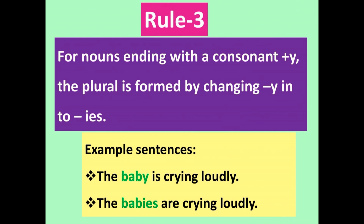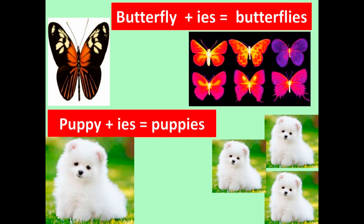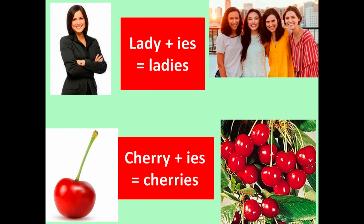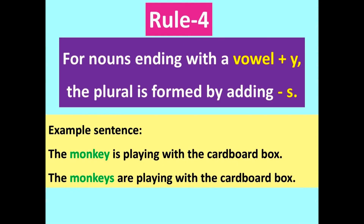Rule number three: for nouns ending with a consonant plus -y, the plural is formed by changing -y into -ies. Example sentence: 'The baby is crying loudly.' becomes 'The babies are crying loudly.' We added -ies to baby to change into plural. More examples: butterfly → butterflies, puppy → puppies, lady → ladies, cherry → cherries.